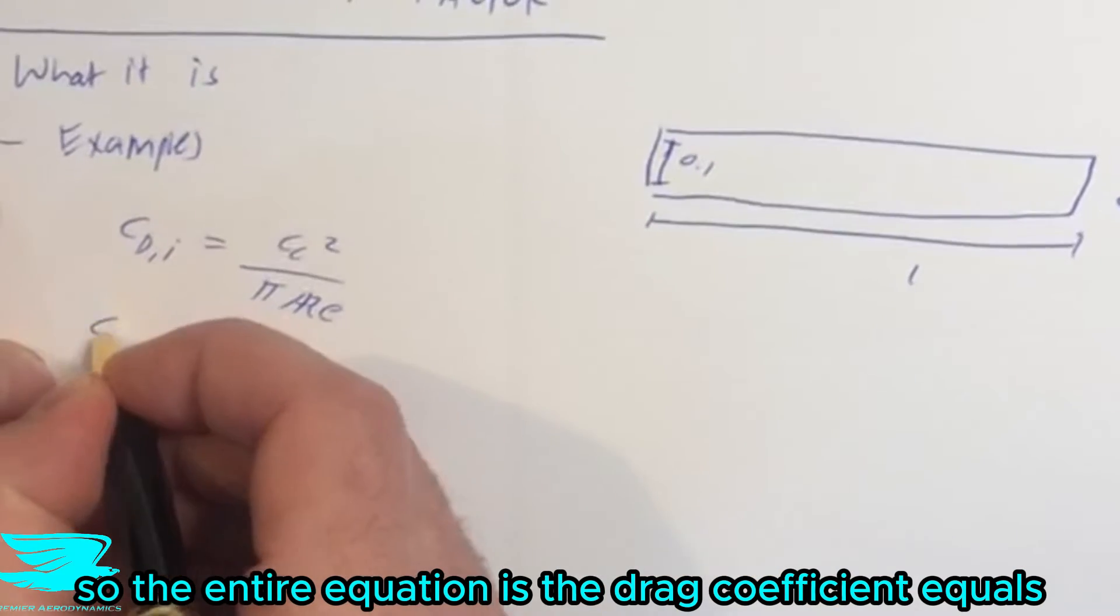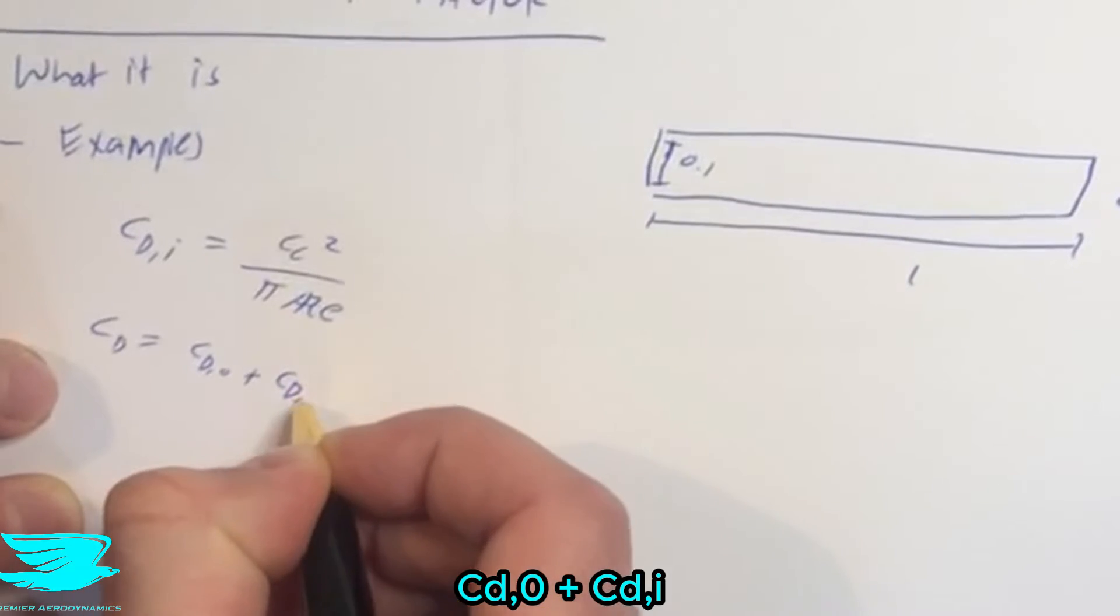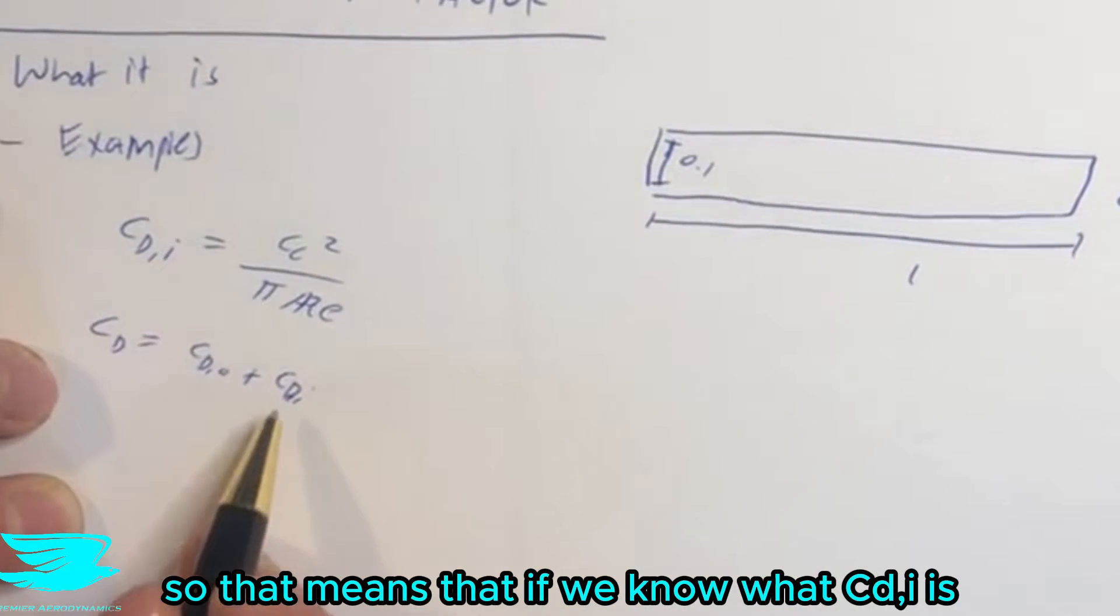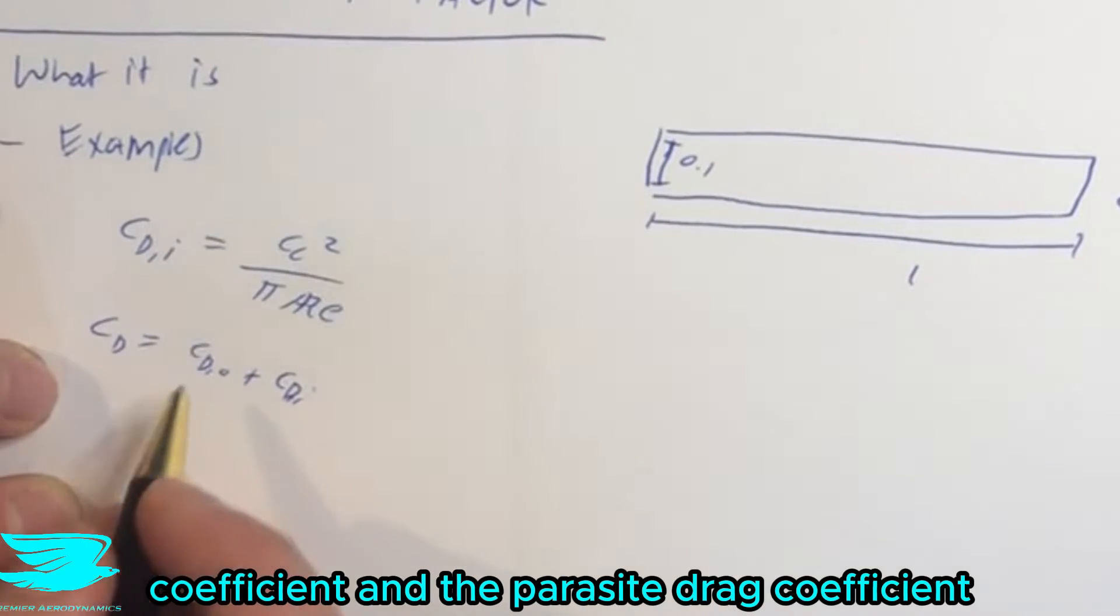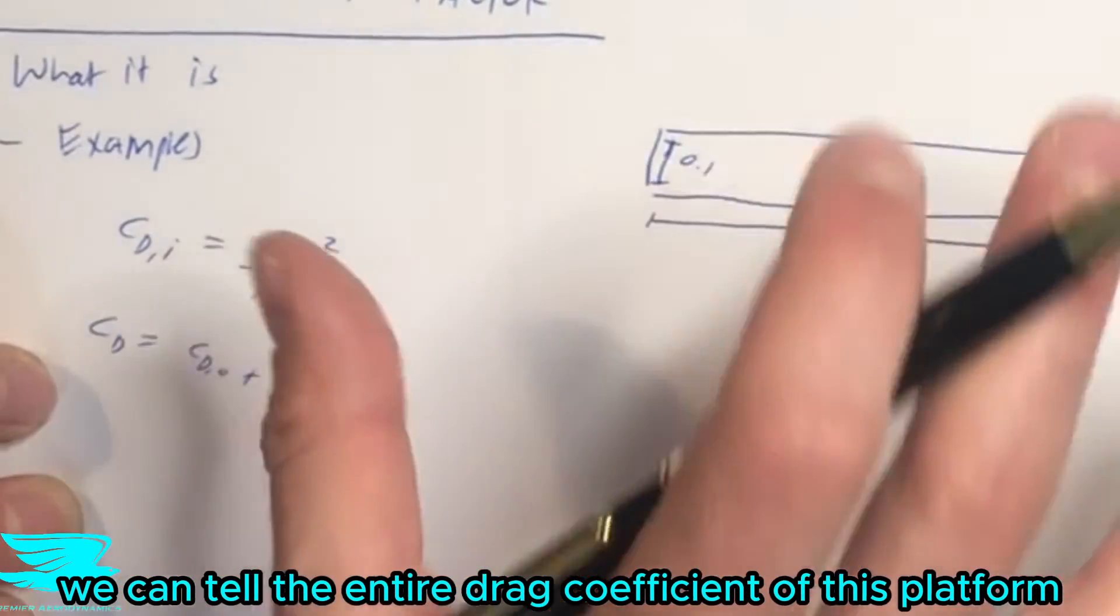So the entire equation is the drag coefficient equals CD0 plus CDI. So that means if we know what CDI is, the induced drag coefficient, and the parasite drag coefficient, we can tell the entire drag coefficient of this planform.